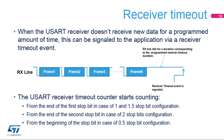The USART supports a receiver timeout feature. When the USART doesn't receive new data for a programmed amount of time, a receiver timeout event is signaled and an interrupt is generated if enabled. The receiver timeout counter starts counting from the end of the first stop bit for 1 and 1.5 stop bit configuration, from the end of the second stop bit for 2 stop bit configuration, and from the beginning of the stop bit for 0.5 stop bit configuration.